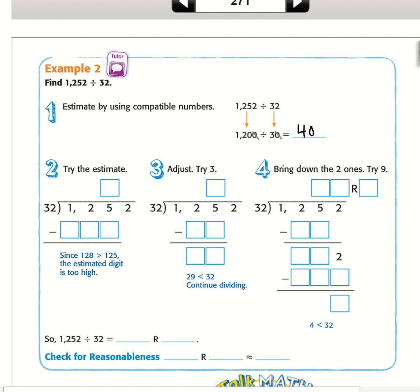We're going to try the estimate. 32 can't go into 12, so we have to go to 125. We know this is 40, so we're going to try 4 here. We're going to say it goes in there 4 times. 4 times 2 is 8, 3 times 4 is 12. Since 128 is larger than 125, that means our quotient is too big. Now we're going to try a different one.